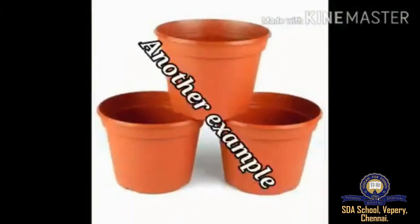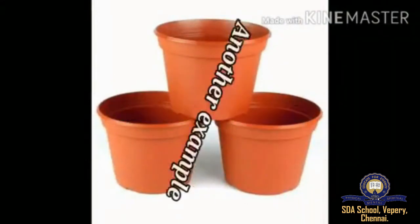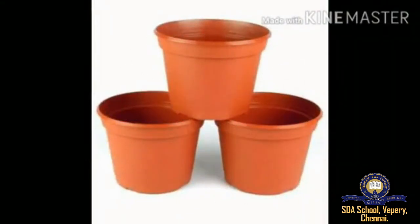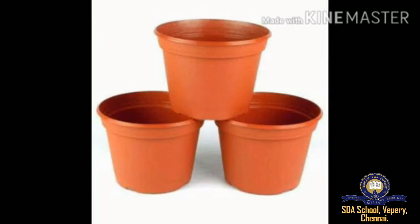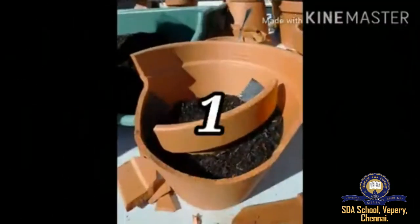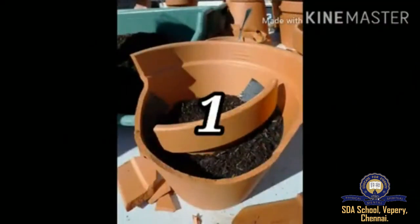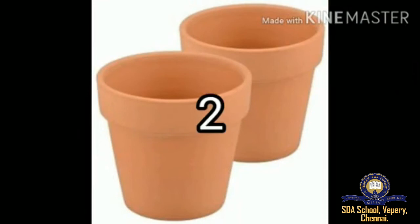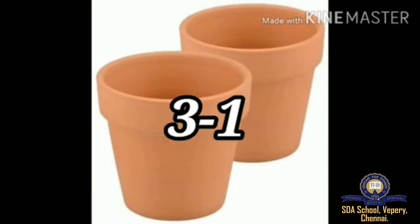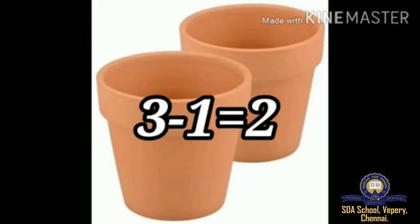I have another example. I have a flower pot — 3 pots in my hand. 1 pot is broken from my hand. So I have the remaining pots in my hand. It will be seen as 3 minus 1 is equal to 2.